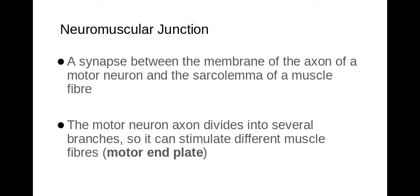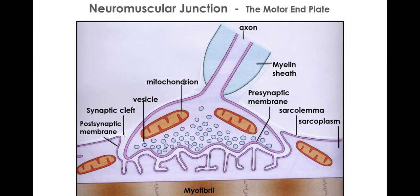Now neuromuscular junction looks like this. As you can see here, the presynaptic membrane. The presynaptic side is very familiar because we've met that in nerves. However, on the postsynaptic membrane, this is the sarcolemma. The sarcolemma is that modified membrane of the muscle fiber. We've also got the sarcoplasm, which is basically the cytoplasm of that muscle fiber.